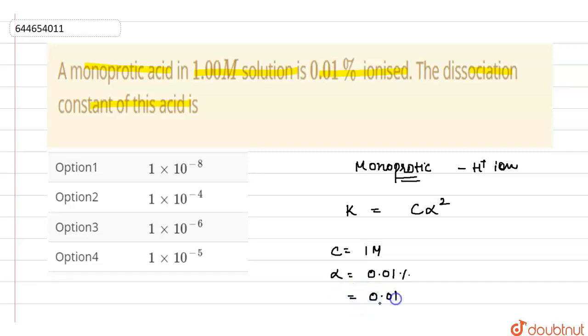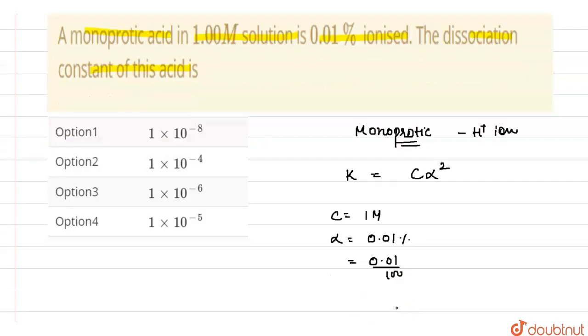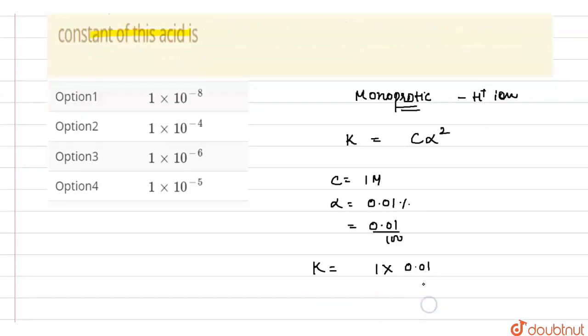So let's put these values here. K will be equal to 1 into 0.01 upon 100 into 0.01 upon 100. When we remove this decimal point, it is also 10 raised to the power minus 4.